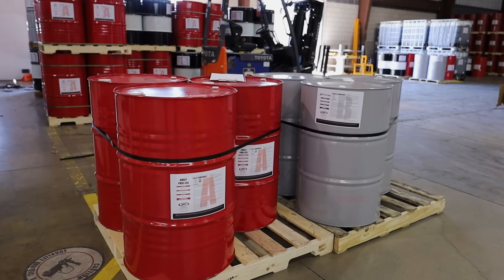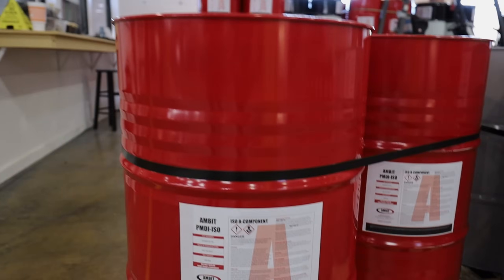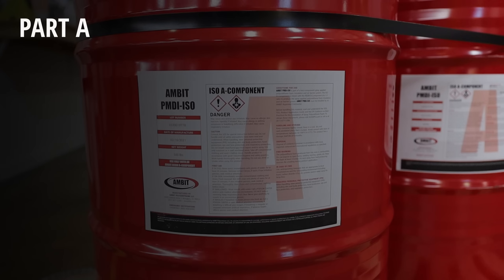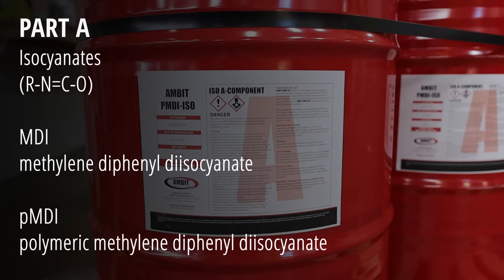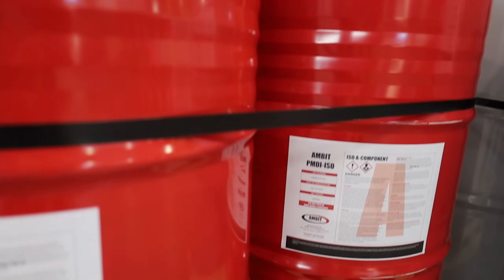Both open and closed cell polyurethane spray foam is made of two parts. Part A contains very reactive low molecular weight chemicals called isocyanates, which have a nitrogen-carbon-oxygen group. These can be methylene diphenyl diisocyanate (MDI) and polymeric methylene diphenyl diisocyanate (pMDI). Part A is standard for all manufacturers.